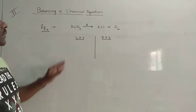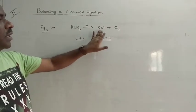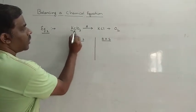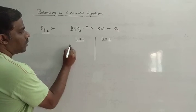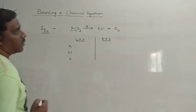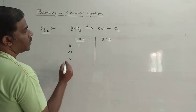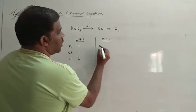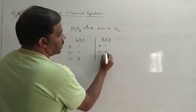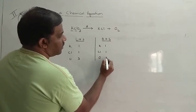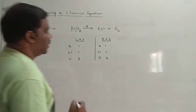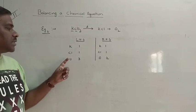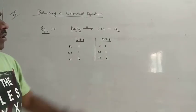Now consider this equation. Here potassium chlorate when heated gives potassium chloride plus oxygen. The elements present are potassium, chlorine, and oxygen. On the left-hand side we have 1 potassium, 1 chlorine, and 3 oxygens. On the right-hand side we have 1 potassium, 1 chlorine, and 2 oxygens. So the number of potassium and chlorine are balanced, but the oxygens are 3 on the left and only 2 on the right.